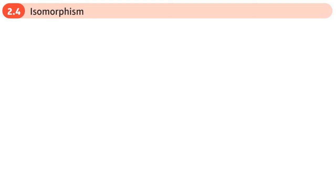This is the fourth and final section of the group chapter, and here we're going to be looking at isomorphisms. The word isomorphism means 'the same type,' and we're going to be looking at groups which are of the same type. We'll consider two groups which are isomorphic to one another.